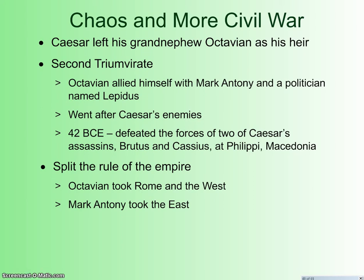They split the empire up. Octavian takes control of Rome and the west — Spain, Gaul, Italy, and the parts along the Adriatic Sea down into Greece. Mark Antony takes the east: Egypt, what we call the Middle East — modern-day Syria, Israel, Jordan — and he takes Turkey. Lepidus gets what's left: the parts of North Africa that are not particularly consequential, other than they are the suppliers of grain to the rest of the empire.